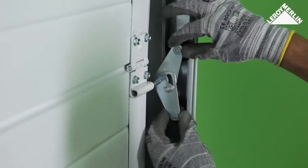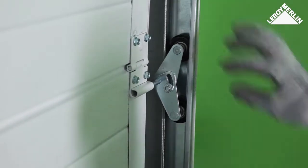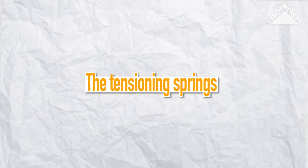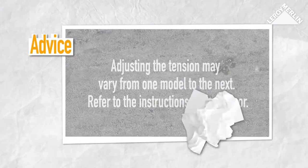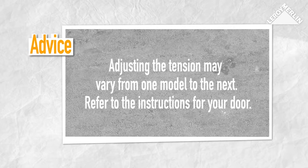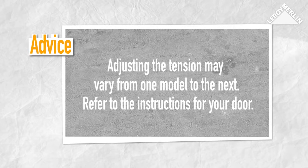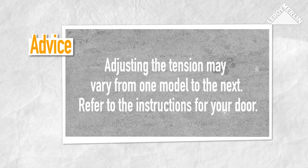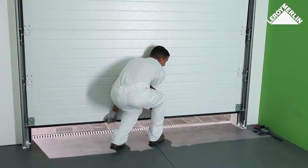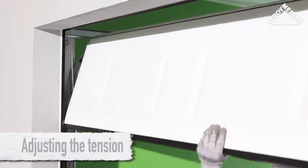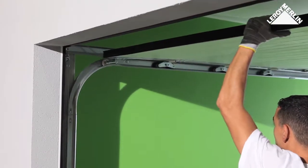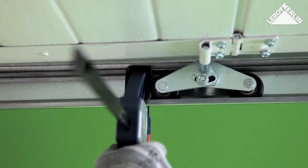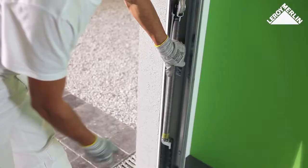Adjusting the tension may vary from one model to the next and even from a standard model to a custom made one. Refer to the instructions that come with your door. Adjusting the tension: Begin by raising the garage door and fix it in place with a clamp. Attach the bottom of the spring to the second or third notch.